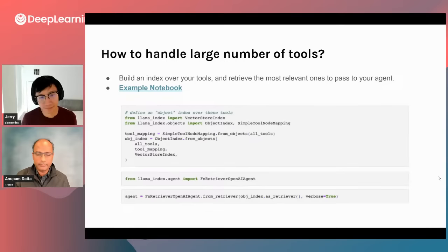Once we transition from RAG to agents, things get a little more sophisticated with that initial reasoning step. For data agents especially, you can think of that initial reasoning step as a layer of abstraction over a RAG — so the RAG triad becomes the agent quad. When the user asks a query, there's now a tool selection step that needs to be evaluated as well, which involves both picking the right tool and translating the original user query into a format appropriate for the selected tool. Then the next steps are similar to RAG: check for context relevance, groundedness, and answer relevance.